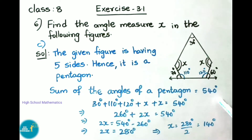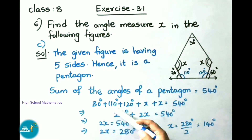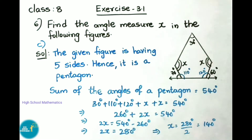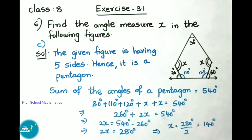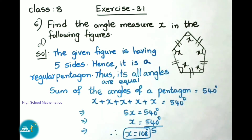The sum of the angles of a pentagon is 540 degrees. We have found the two angles as 110 and 120 degrees. Adding all five angles: 30 + 110 + 120 + x + x = 540. That gives 260 + 2x = 540, so 2x = 280, therefore x = 140 degrees. The other two angles are each 140 degrees.